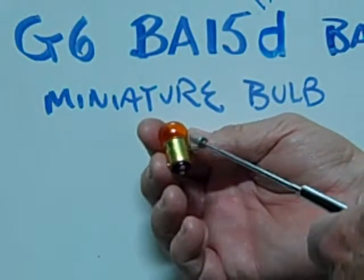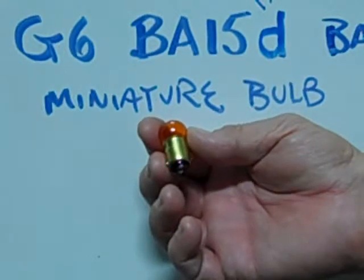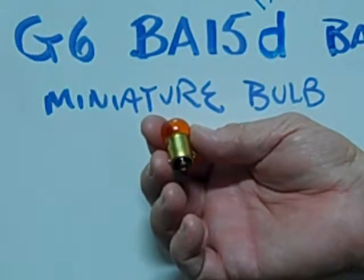This is an example of a number 1178A Amber Miniature Bulb.